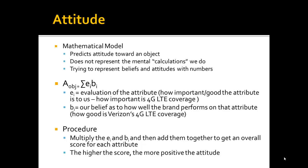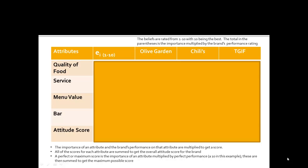The reason we keep E and B separate is that not all attributes are equally important to everybody, and not all people rate Verizon's or Sprint's 4G LTE coverage the same. Now we're going to look at an actual example to help make things a little clearer.